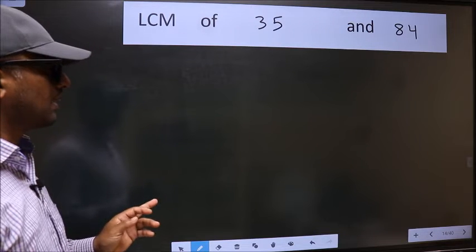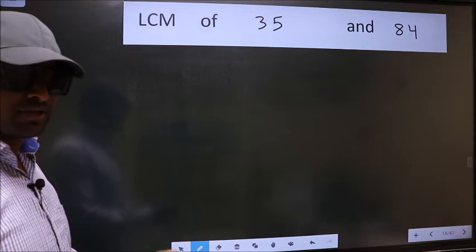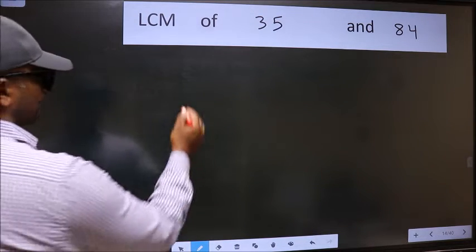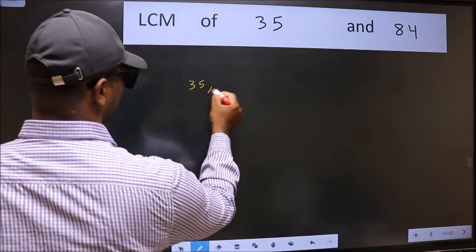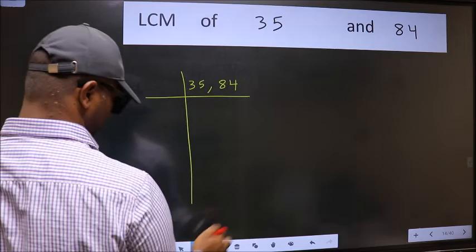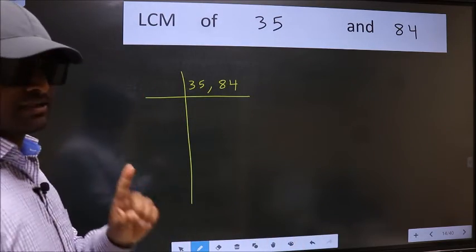LCM of 35 and 84. To find the LCM, we should frame it in this way. Write 35, 84. This is your step 1.